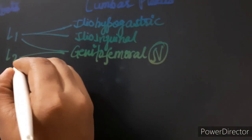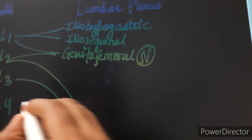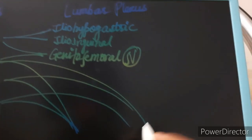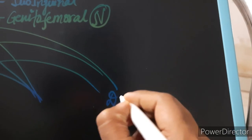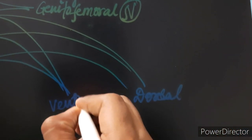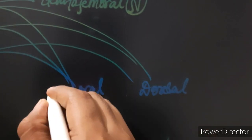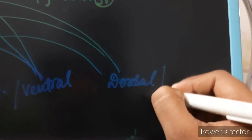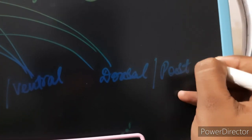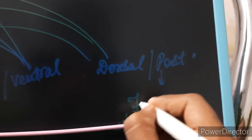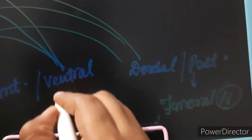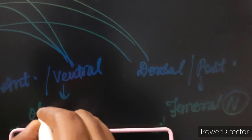L2, L3, and L4 give two branches: one is called the dorsal, also called the posterior division, and one is called the ventral, also called the anterior division. The posterior division gives the femoral nerve and the anterior division gives the obturator nerve.